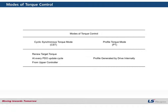The significant difference between them is PDU update. In the CST mode, it renews the target torque at every PDU update cycle. However, in PT mode, the profile is generated by the drive itself, therefore it doesn't need PDU update. The better decision between them depends on the system and user preference.